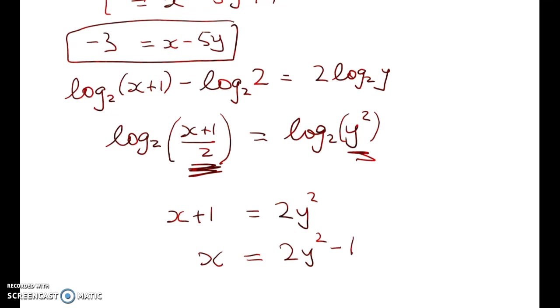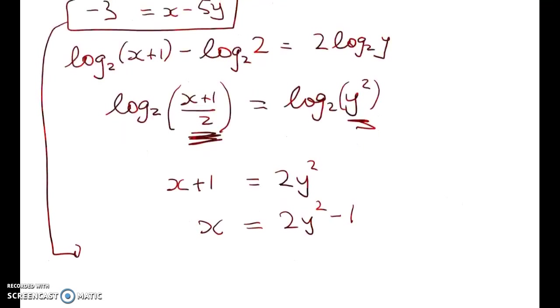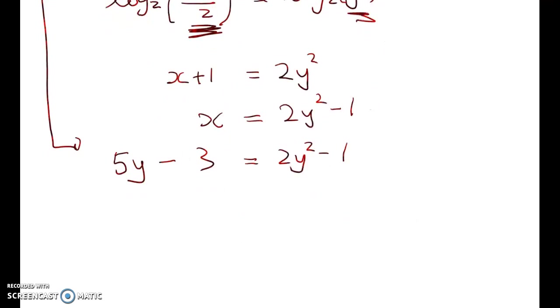From above, from up here, we can rewrite x as 5y take away 3 is equal to 2y squared minus 1. So we're down to a quadratic. 2y squared minus 5y, adding that to both sides we get plus 2 is equal to 0.